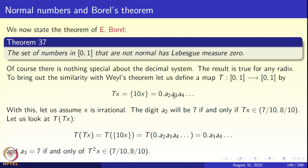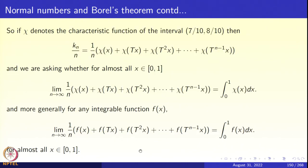Similarly, a₃ will be 7 if and only if T²x lies in the interval [7/10, 8/10]. We have a nice recipe for deciding whether the digit a₄ will be 7 or not. That will depend on whether T³x lies in that interval. Now it is very clear what we must do.